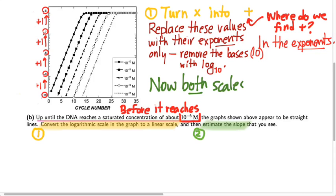We want to pluck those exponents out of the powers on the vertical axis and replace those values with their exponents only. To get the base 10s away, the base-10 logarithm is exactly the tool we can use. So on that vertical axis, we take the base-10 log of each of those original numbers — that cancels out the bases of 10 and leaves us with just the exponents. With just the exponents on the vertical axis, we have a linear scale, since those exponents separated by equal distances are also separated by equal differences of plus 1. Now both axes have a linear scale, and we're ready to estimate a meaningful slope.